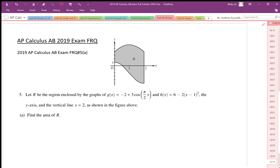Number 5 says, let R be the region enclosed by the graphs g of x and h of x, the y-axis, and the vertical line x equals 2.